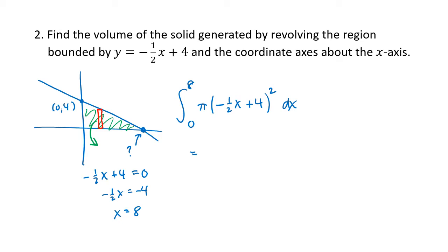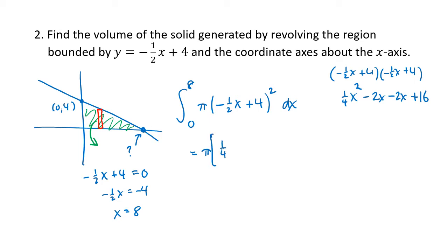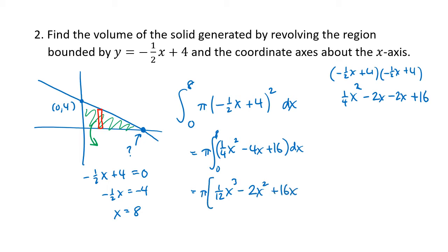To integrate negative one-half x plus 4 all squared, we multiply it out by FOILing. That gives positive one-fourth x squared, then negative one-half x times 4 is minus 2x — we get two of those from the outer and inner terms — and then 4 times 4 is 16. So we integrate pi times one-fourth x squared minus 4x plus 16 from 0 to 8. The antiderivative is one-twelfth x cubed minus 2x squared plus 16x, multiplied by pi, evaluated from 0 to 8. Plugging in 8 and subtracting, we end up with 128π divided by 3.